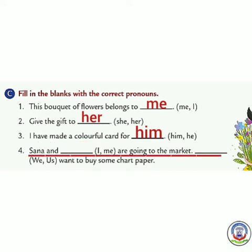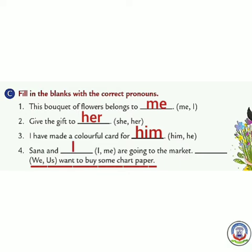Number 4: 'Sona and dash are going to the market. Dash want to buy some chart paper.' Sona and I are going together, so when the speaker is included we use 'we'. Answer: 'Sona and I are going to the market. We want to buy some chart paper.'